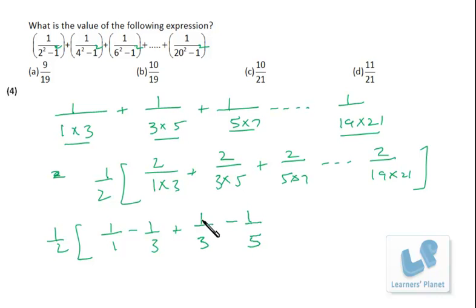Similarly, it is 1 upon 5 minus 1 upon 7, and it is 1 upon 19 minus 1 upon 21.